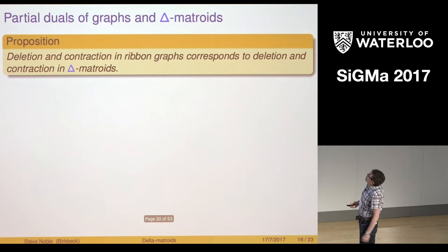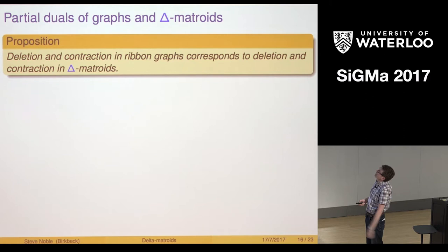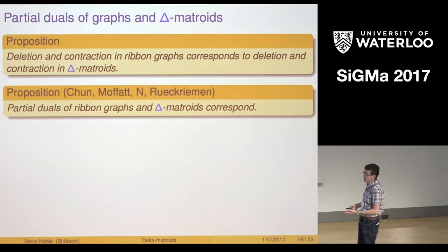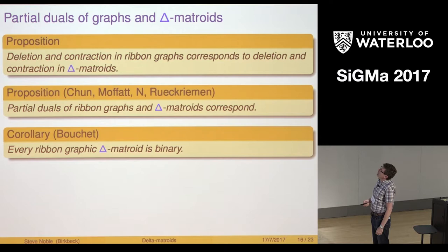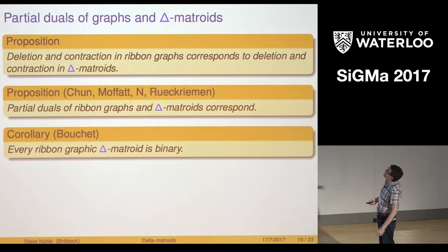A good thing is that deletion and contraction in ribbon graphs corresponds to deletion and contraction in delta matroids. Partial duals of ribbon graphs and delta matroids correspond. They're the same things. This is one reason for using the partial dual name.